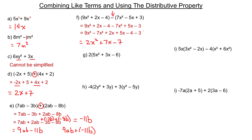Subtracting 4 is the same as adding negative 4, and subtracting 3 is the same as adding negative 3. So that's the same as adding negative 7, and adding negative 7 is just the same as subtracting 7. That's why we can write it in this more succinct form rather than having brackets.